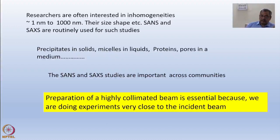So, as I am just summing it up, researchers are often interested in inhomogeneity from one nanometer to thousand nanometer - precipitates in solids, micelles in liquids, proteins, pores in a medium. And I must mention here the small angle neutron scattering and small angle x-ray scattering, SANS and SAXS, are important experimental tools across communities.